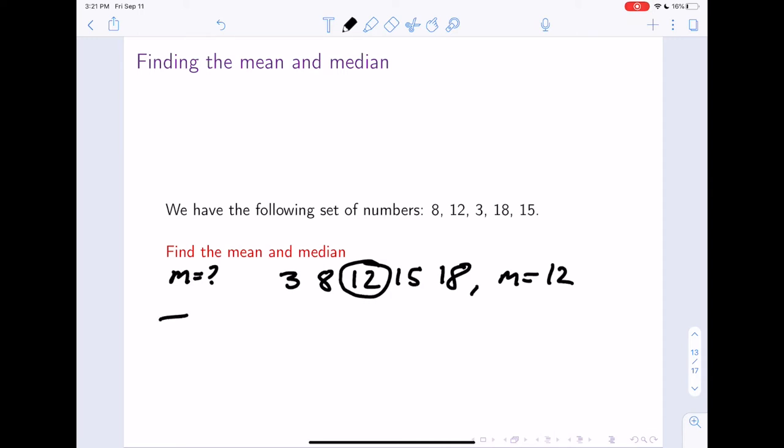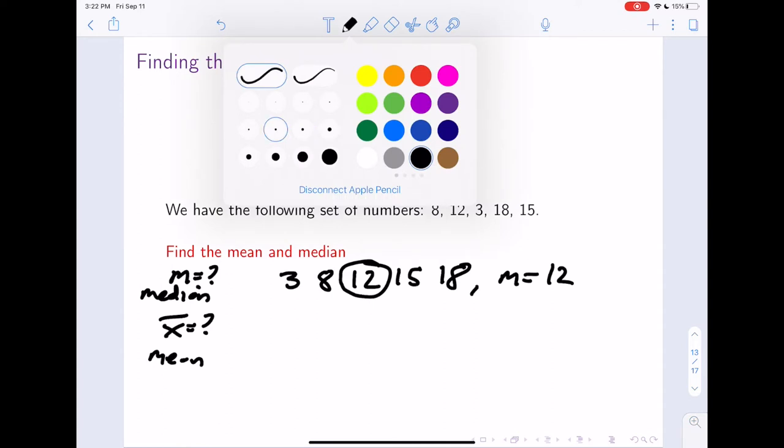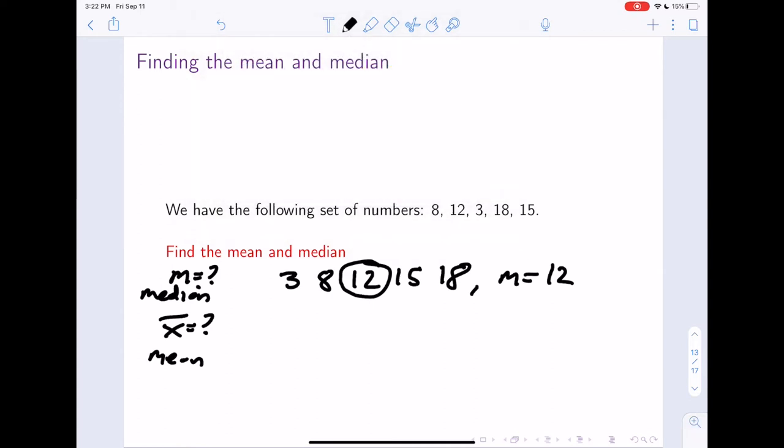Now, what is the mean? To find the mean, I said we need to sum all these up and divide by the total number of things there are. So it should be 3 plus 8 plus 12 plus 15 plus 18, and there's going to be 5 things.